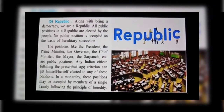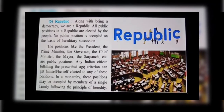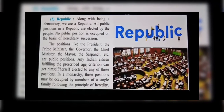Fifth is Republic. Along with being a democracy, we are a republic. All public positions in a republic are elected by the people; no public position is occupied on the basis of hereditary succession. Any citizen fulfilling the prescribed age criterion can get elected to positions like the President or Prime Minister. In a monarchy, by contrast, such positions may be occupied by the member of a single family following the principle of hereditary succession.